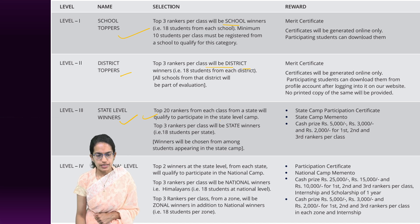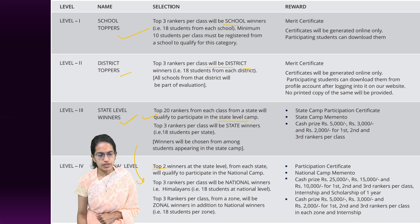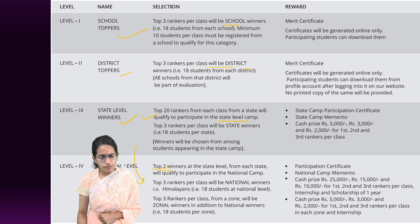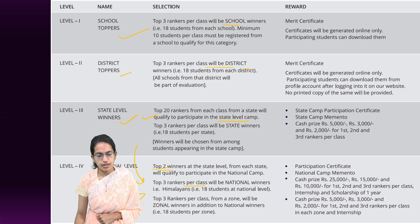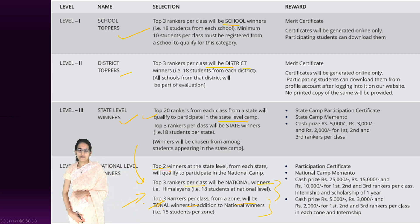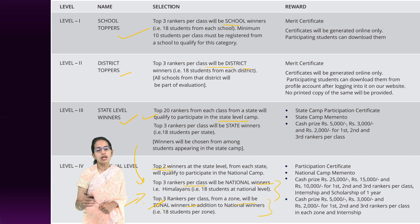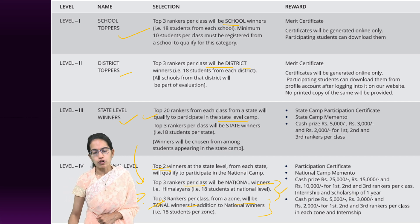At the state level, 20 toppers from each state in each class participate, and of these, two go to the national level. At the national level, three rank holders per class are given national winner awards, and three rank holders per class at the zonal level receive awards as well. Eighteen students at the national level and 18 at the zonal level are given an internship along with a scholarship for one year.